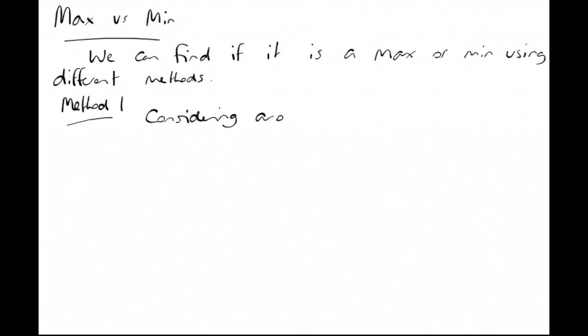Differentiation: finding maximums and minimums. We can find if it is a maximum or minimum using different methods. Method one: consider around the point.